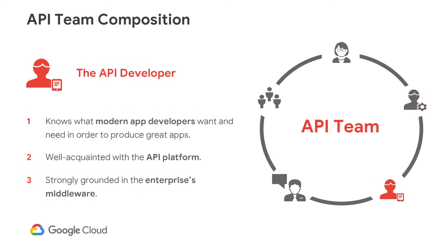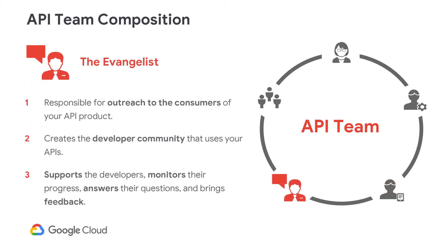The API developers are your core development group. At the end of the day, these are the folks that are going to get the job done. The API developers will look to the API team leader for guidance on the scope, and the architect for their design principles. They will then take those inputs and build out the actual APIs. The API developers should be very familiar with the API platform — without them, nothing will get built, so be sure you're nice to them.